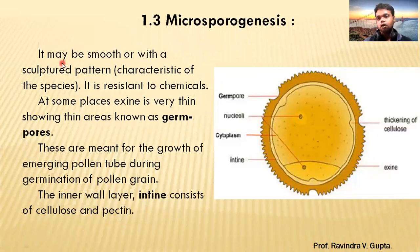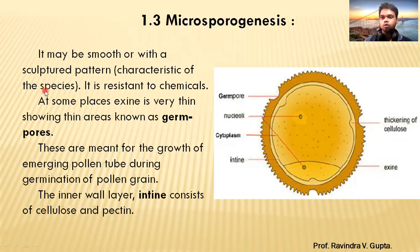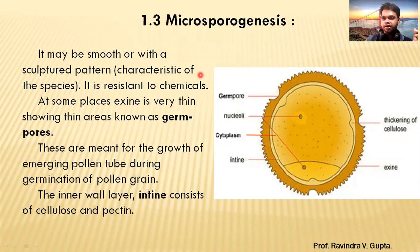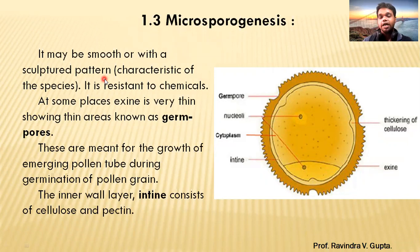The exine wall may be smooth or with a sculptured pattern characteristic of the species. So depending on which species the pollen grain belongs to, its structure varies. In some plants, the pollen grain formed can be smooth, and in some plants, the sculptured pattern may also be present. This depends on the species. The exine wall is also resistant to chemicals.